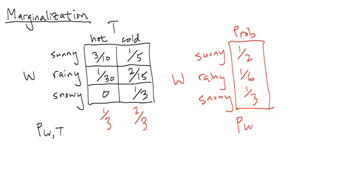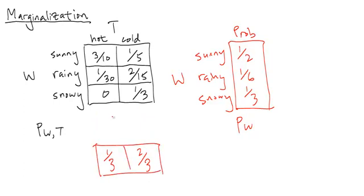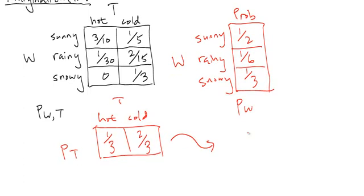Similarly, the distribution I get here turns out to actually be the probability distribution for T — hot, cold. So this is P sub T. Just a small comment: it doesn't actually matter whether you write a probability table as a column or as a row. This thing you can also represent as 1/3, 2/3, hot, cold. Same thing.